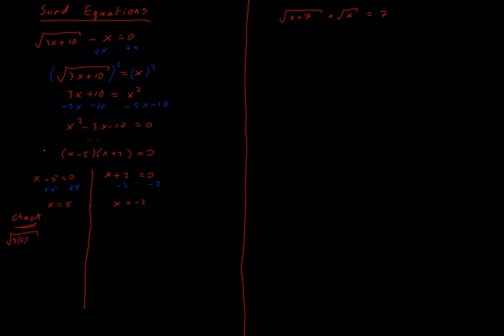So I'm going to sub in 5 for my x. I get root of 3 times 5 plus 10 minus 5 is equal to zero. And I get root 25 minus 5 is equal to zero. 5 minus 5 is equal to zero, 0 is equal to zero, which is true. So this value of x is a correct solution.